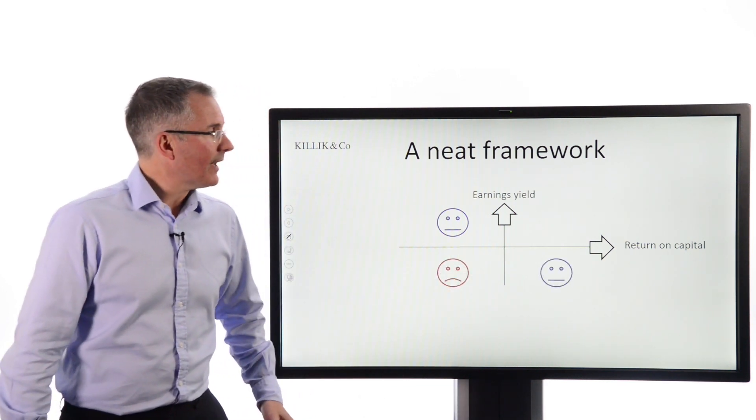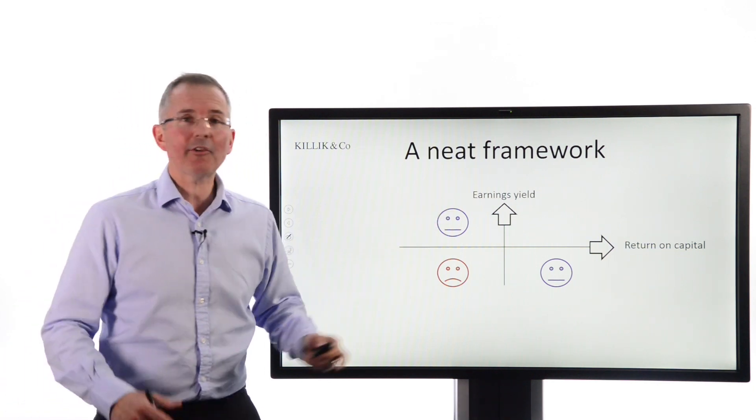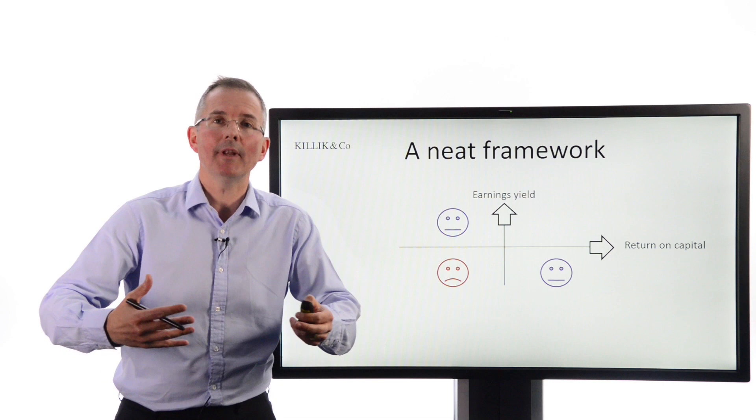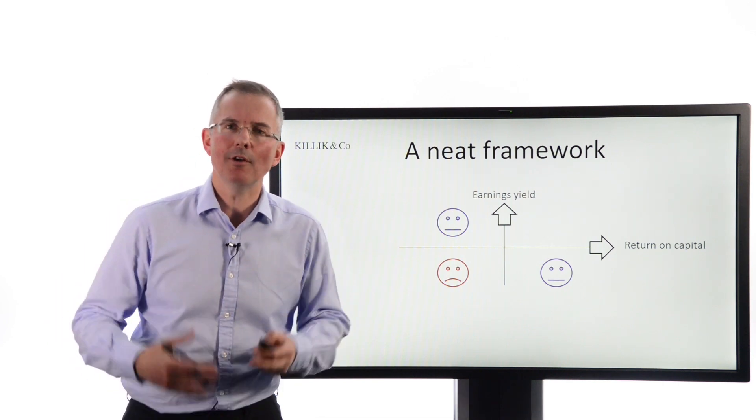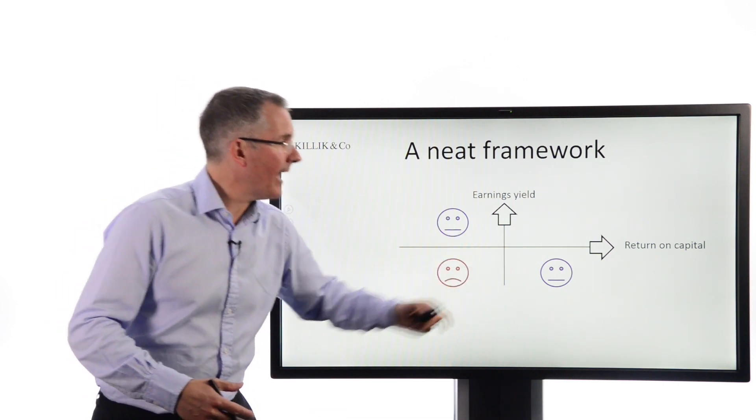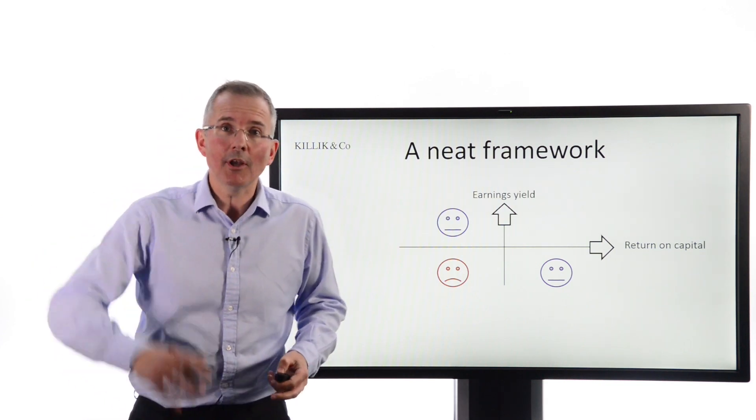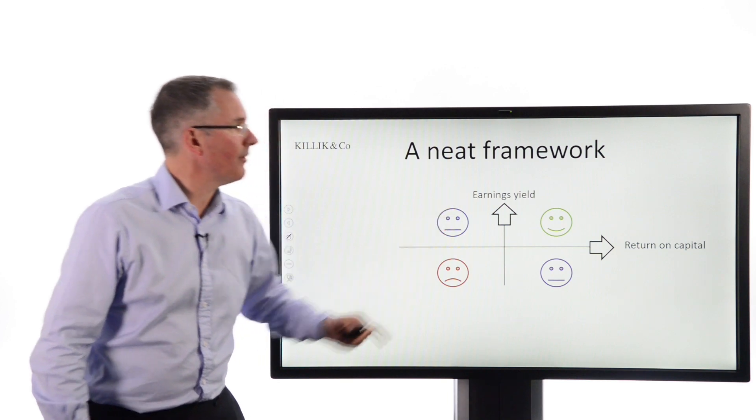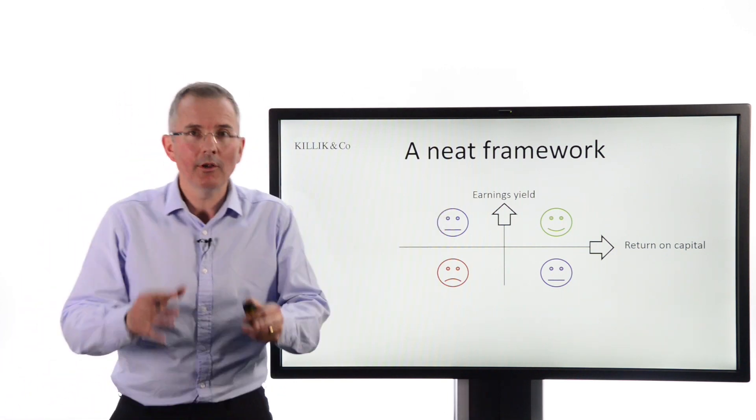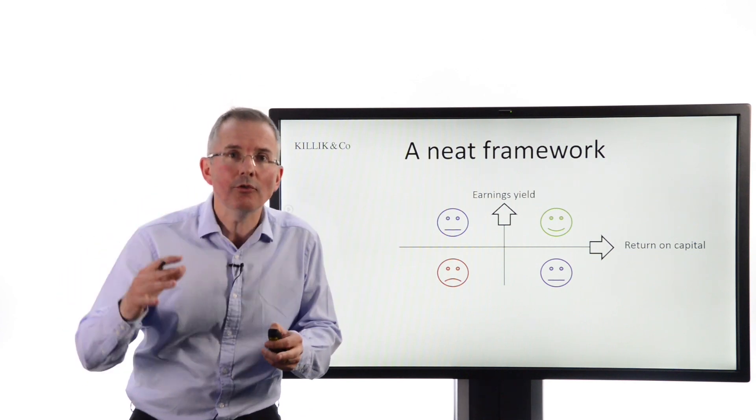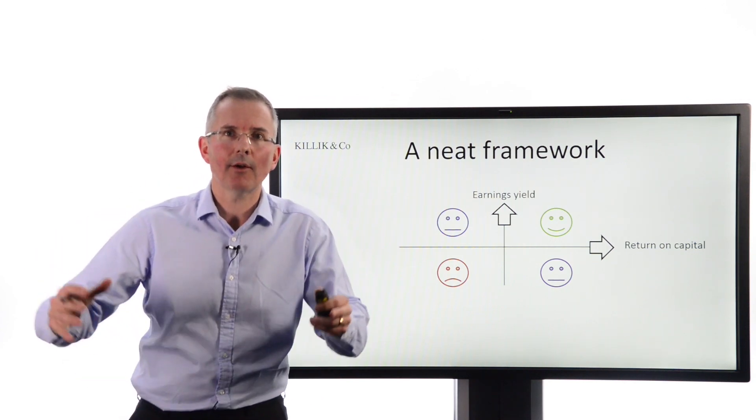Third quadrant, if you like, is high return on capital, but they're expensive. Low earnings yield. Because remember, the earnings yield is the inverse, effectively, of the P-E ratio, a version of the P-E ratio. So down there, yeah, you've got a stock that's coming off the ropes, but it's expensive. So for Greenblatt, the key was to find stocks in that quadrant there. High earnings yield, so they're good value, and they're also growing. Good stocks at cheap prices. Sounds fantastic.